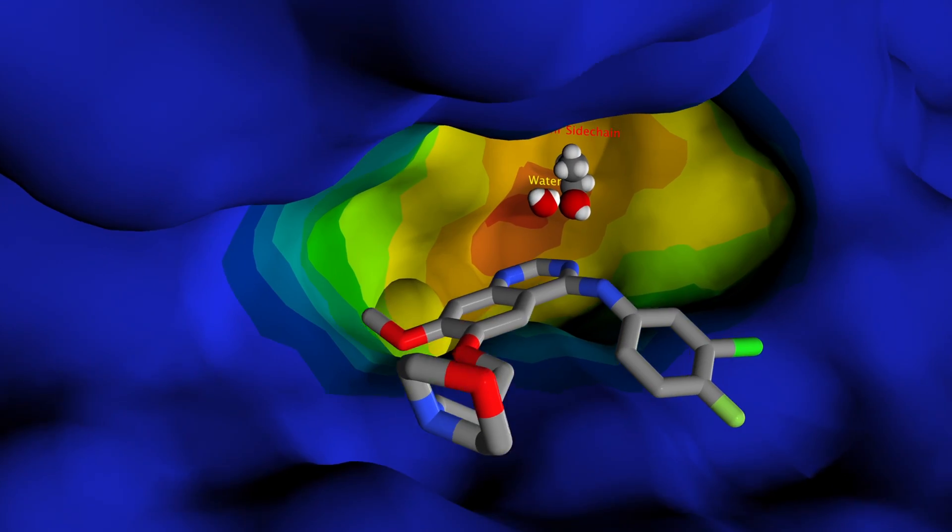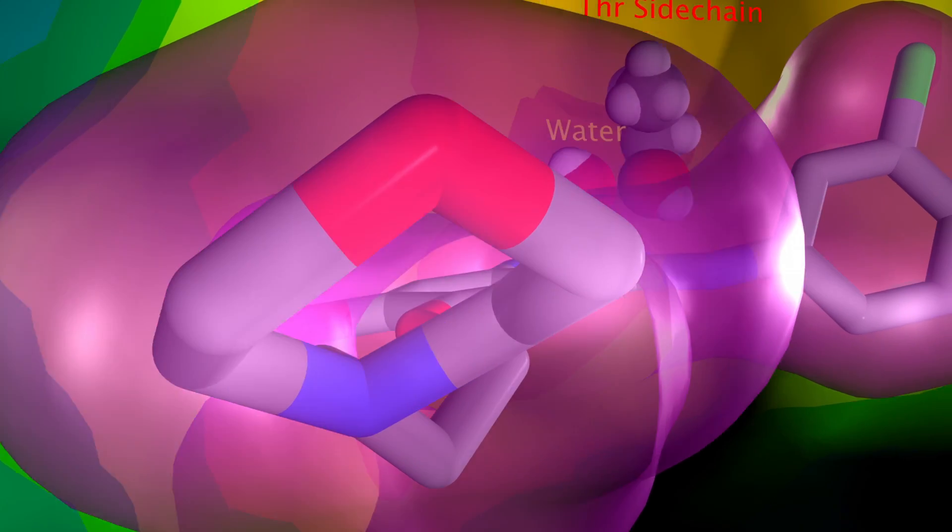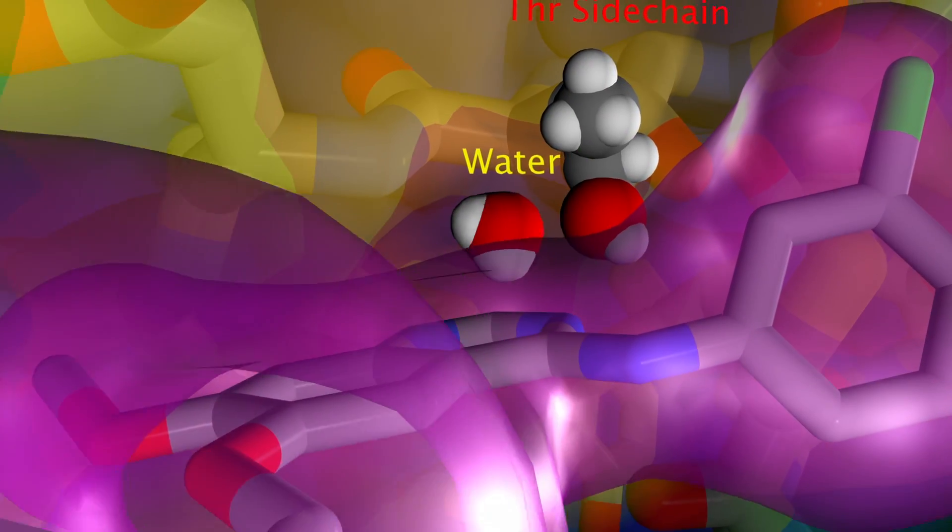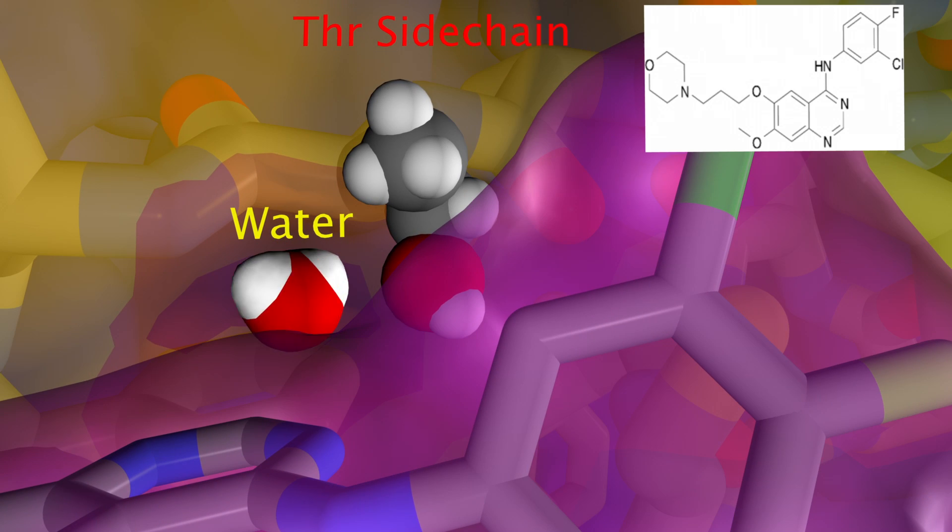The higher concentration of Iressa as compared to ATP allows the drug to prevent ATP from binding. The crucial binding region for Iressa is at the side chain of the amino acid threonine at position 790.